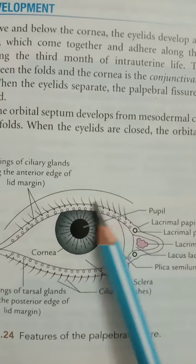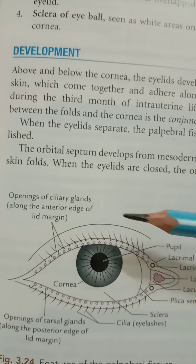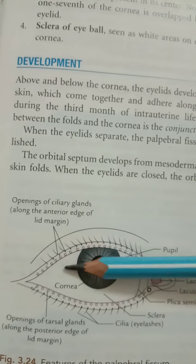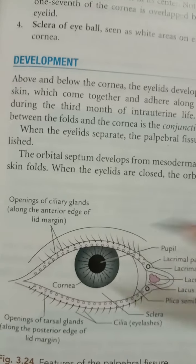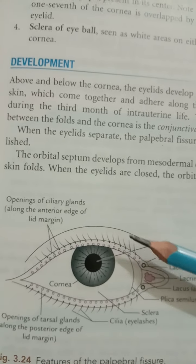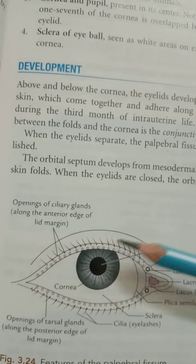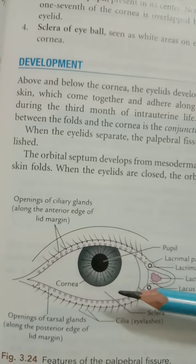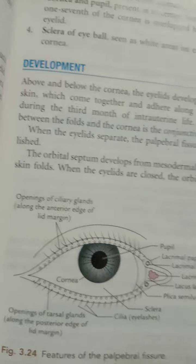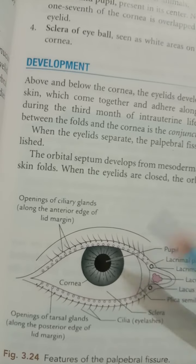The conjunctiva is a thin transparent mucous membrane which lines the inner surface of the eyelid, called the palpebral conjunctiva, and the front of the sclera, called the bulbar conjunctiva. The potential space between the eyelid and the eyeball when the eye is closed is called the conjunctival sac. The lines of reflection between the palpebral and bulbar conjunctiva above and below form the superior fornix and the inferior fornix.